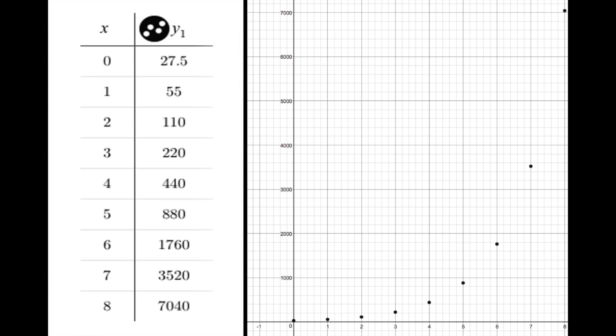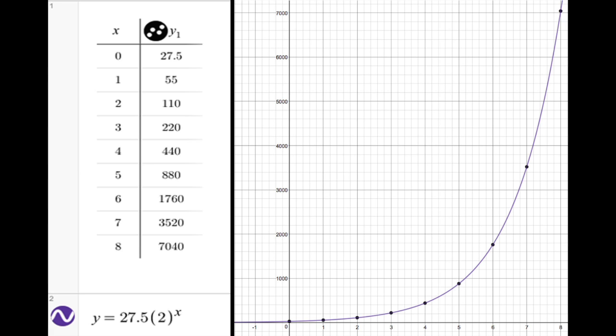Here are all the frequencies from before. The independent variable is the number of the A. The dependent variable is the frequency of the pitch. The equation lines up perfectly with all the points. This means the equation must be correct. Because the data is perfectly exponential, a regression will give us the same equation.